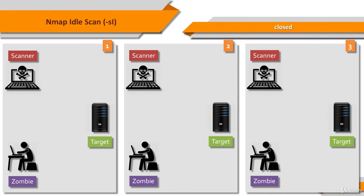Now let's see what happens in an IdleScan if the target port is closed. The first step is to probe the IPID of the zombie system. The attacker sends a SYN/ACK to the zombie. Since the zombie does not expect the packet, it sends back a RST with an IPID.